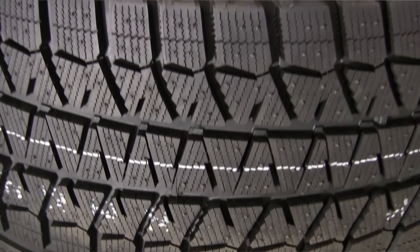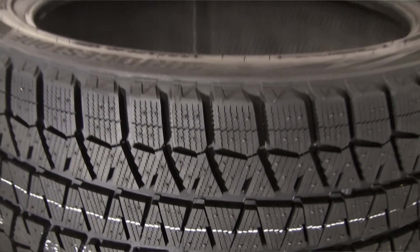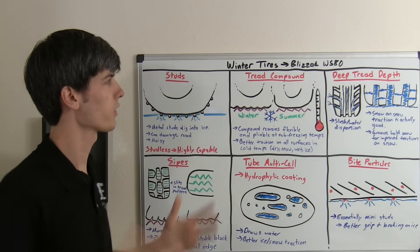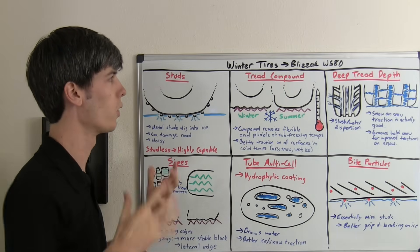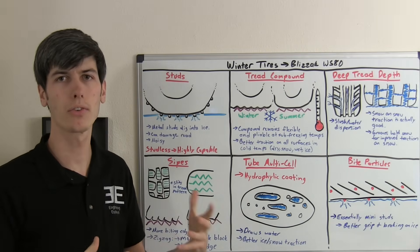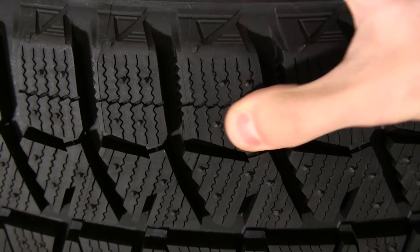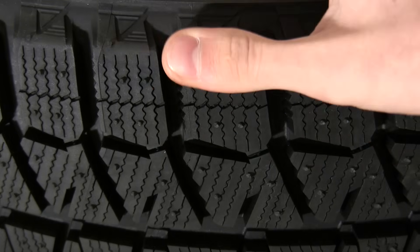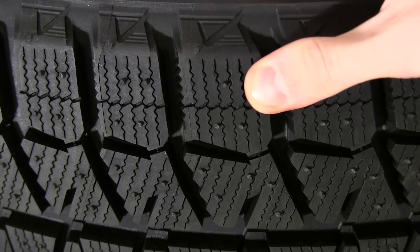Studless tires have come a long way, and with these advancements in tire technology, these tires are now highly capable in winter conditions. The next method is the tread compound. Winter tread compound on these tires is actually quite a bit softer in colder temperatures. As the temperature drops below freezing, summer tires are going to harden up, where these winter tires are still going to stay flexible and pliable and provide better traction.